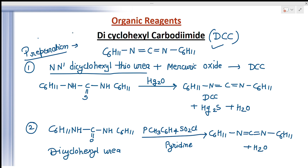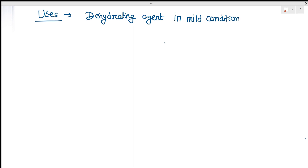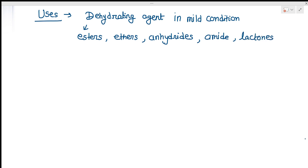These are the two methods by which DCC can be prepared. Now, what are its applications? The main use of DCC is as a dehydrating agent. We can use several other reagents like P2O5, but DCC is preferred because it provides dehydration under mild conditions. It can be used for dehydration of esters, ethers, anhydrides, amides, lactones, and peptides.